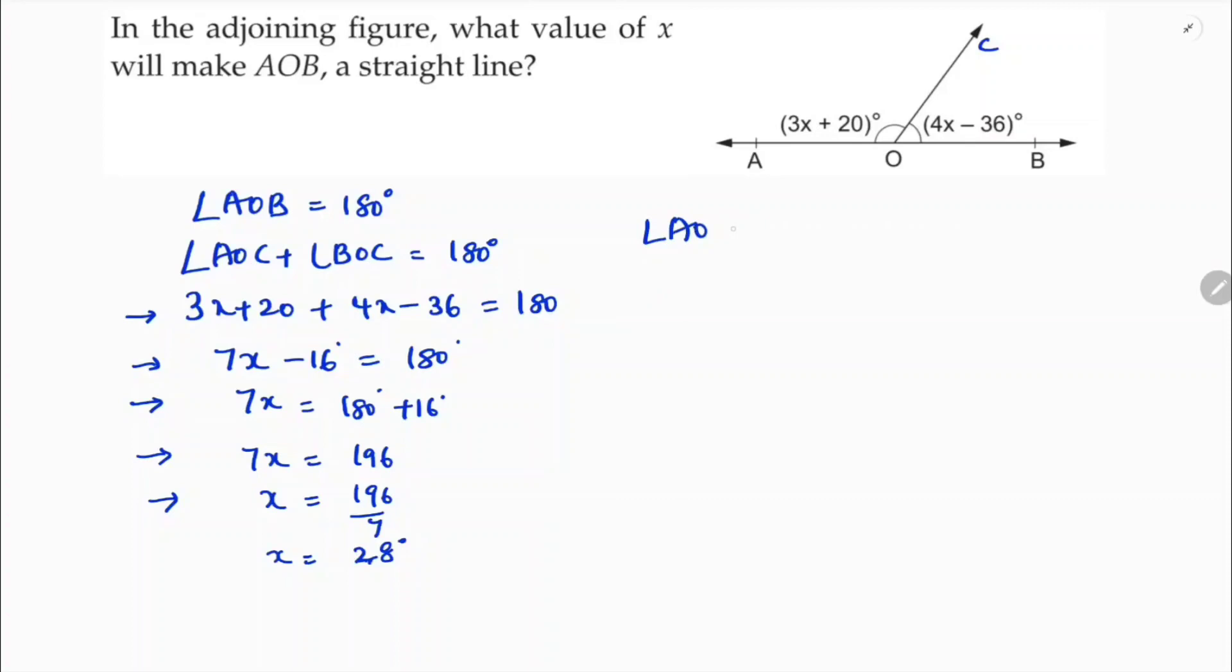Find the angle AOC, which is 3x plus 20. So x is 28, 3 times 28 plus 20. 3 times 28 is 84, plus 20, which is 104 degrees.